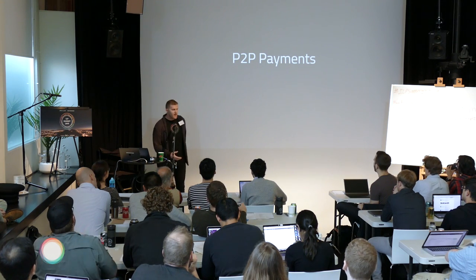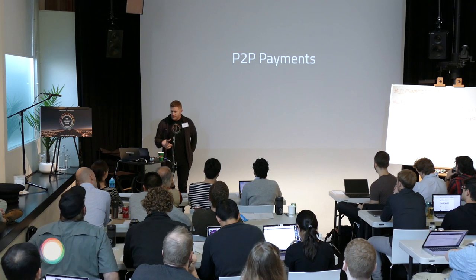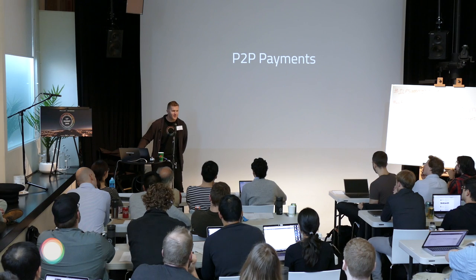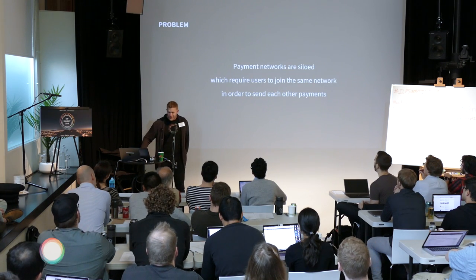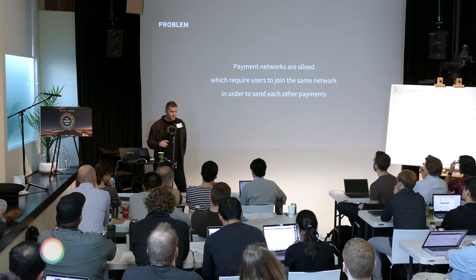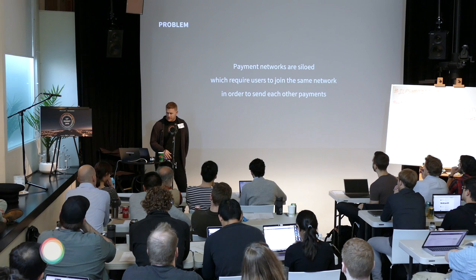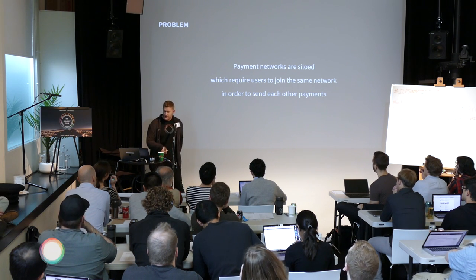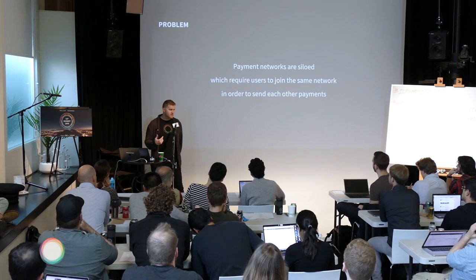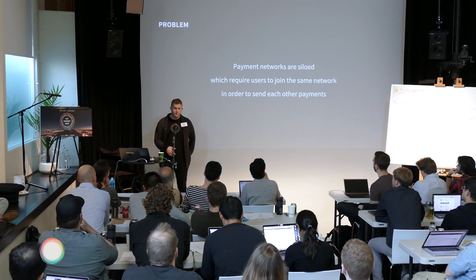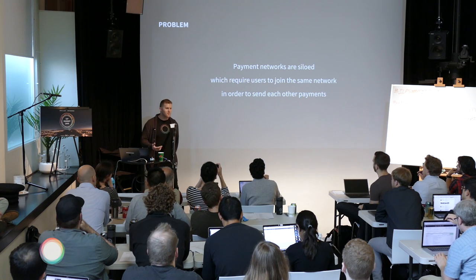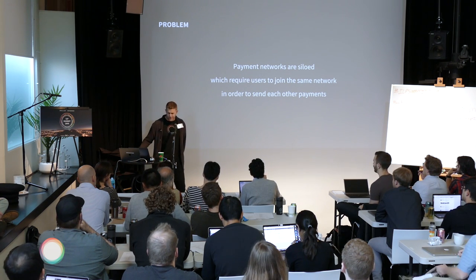One of the spaces that the Spring team is particularly looking at is peer-to-peer payments. If anyone hasn't heard of peer-to-peer payments, you're probably at the wrong place. So there's a problem — and Evan really highlighted it very succinctly: payment networks are really siloed today. They're becoming more and more siloed; they require users to join the same network in order to send each other payments. This is the case for payment applications, crypto networks, banks — ledgers everywhere — and really no actual interoperability protocol, which is a big reason why we are all here.